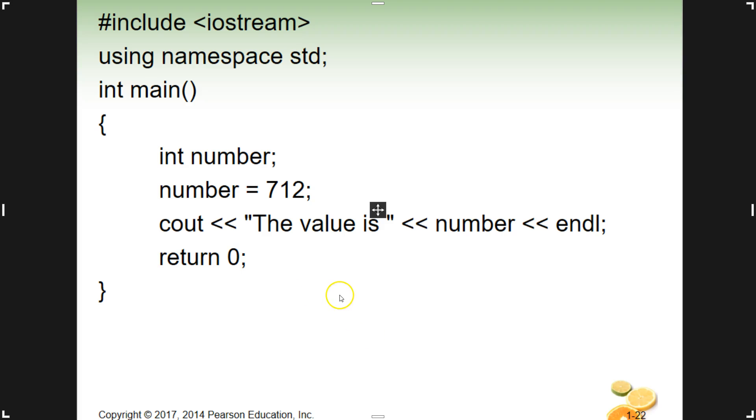If you were to print this so that it would work, you want to remove the quotes around number, then it will put the value. So this would say the value is 712, and then go to the next line and that's it. Now we're at the end of the section.